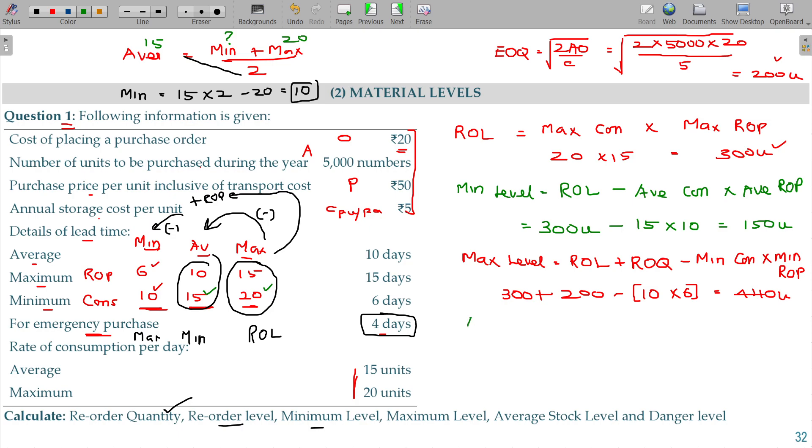And average level. Average level: minimum level plus maximum level by 2, is one of the formulae. Minimum level being 150, maximum level being 440.